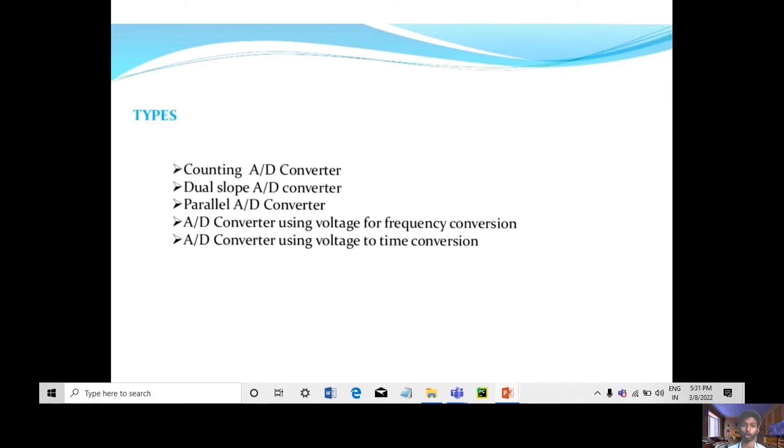Second is dual slope ADC converter. The integrator generates two different ramps: one with the unknown input voltage VA and another with the known reference voltage VR. It is called dual slope.